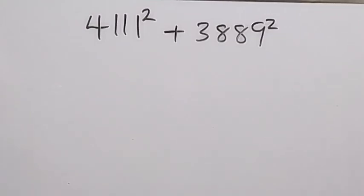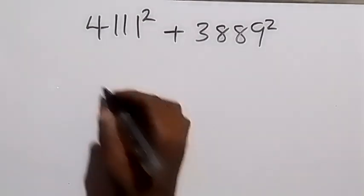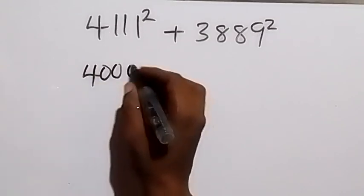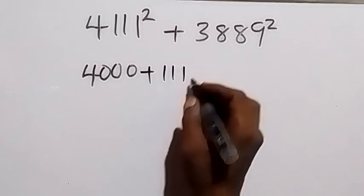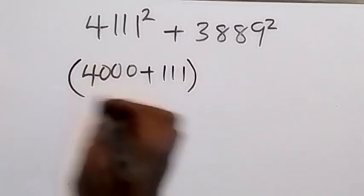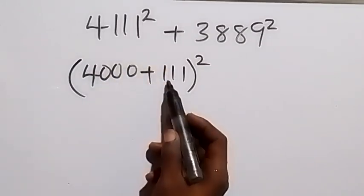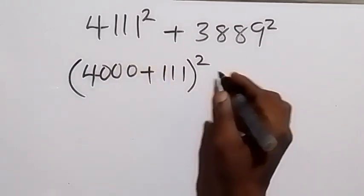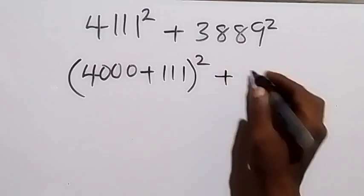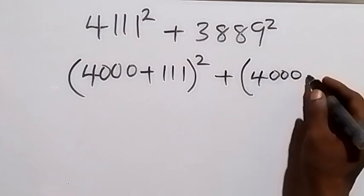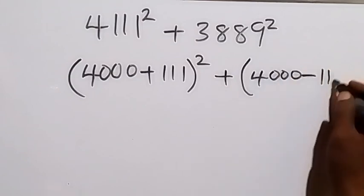Hello, you are welcome. How to solve this nice algebra problem. From here, let's rewrite this as 4111 squared. We can write 4111 as 4000 plus 111, then squared. Also, this side we can write as 4000 minus 111, which gives us 3889 squared.